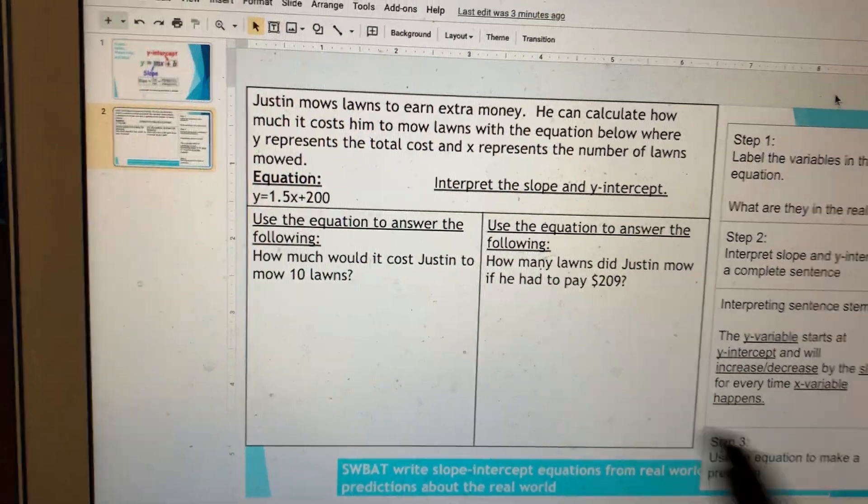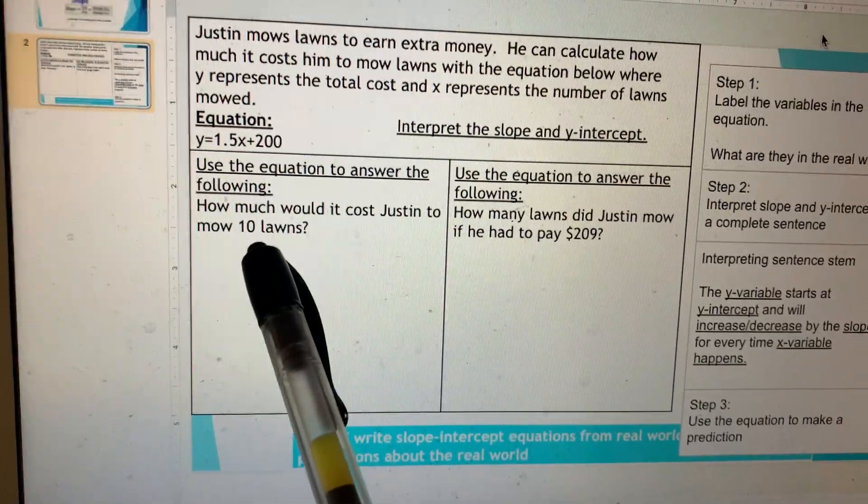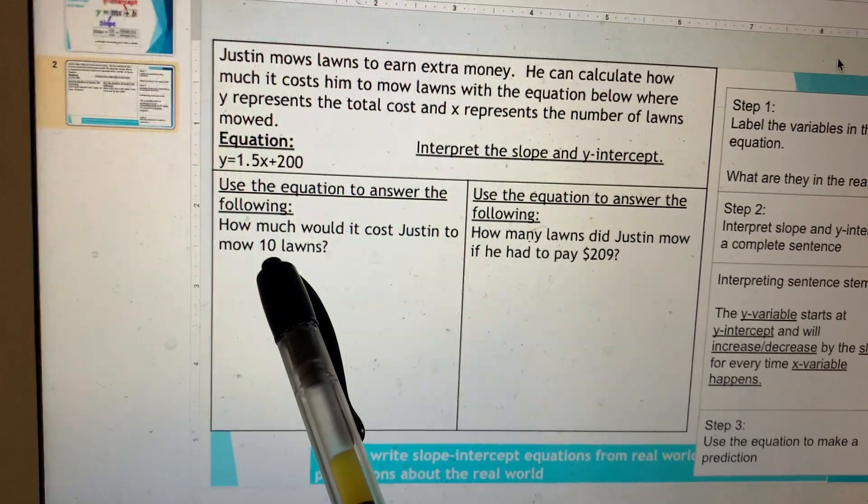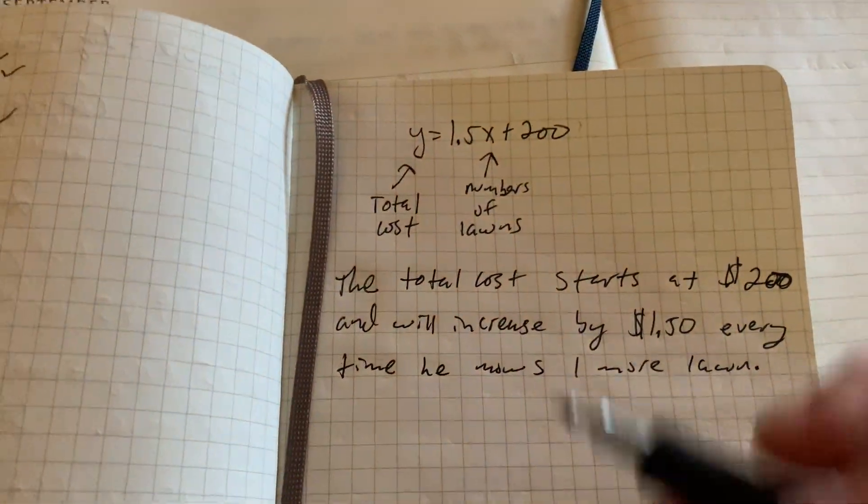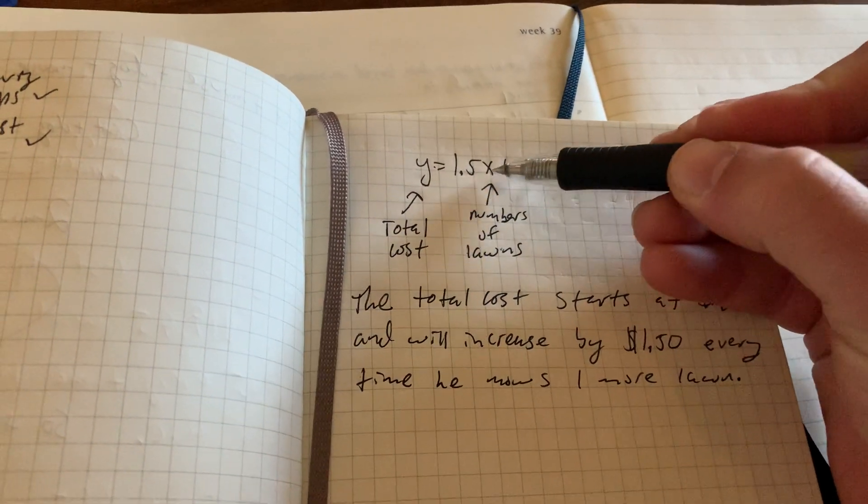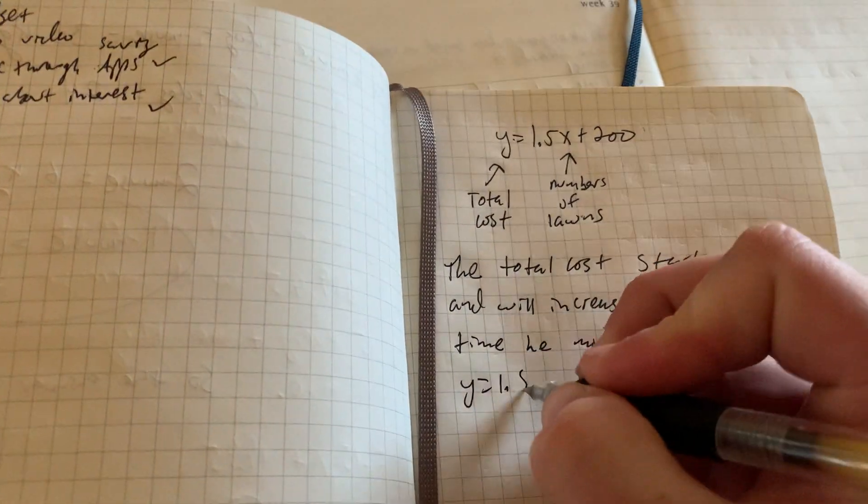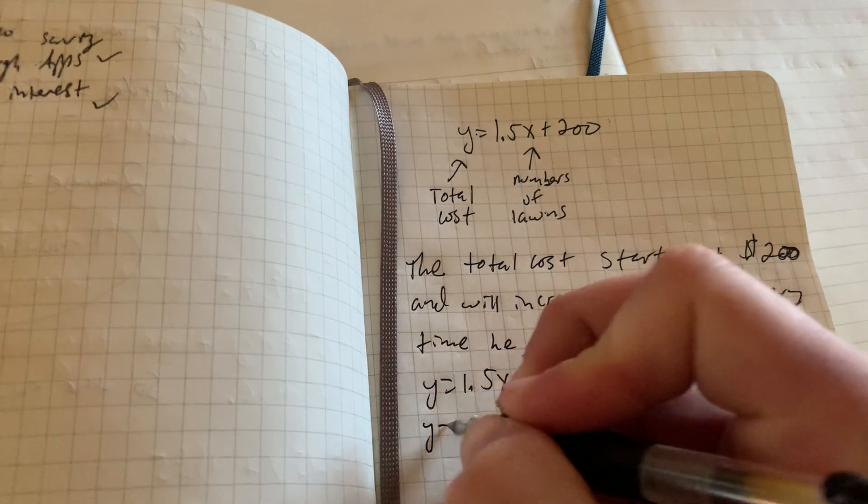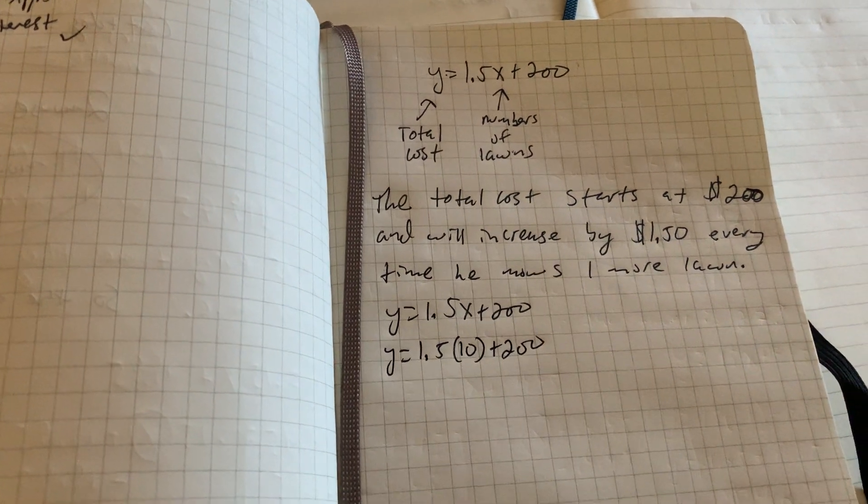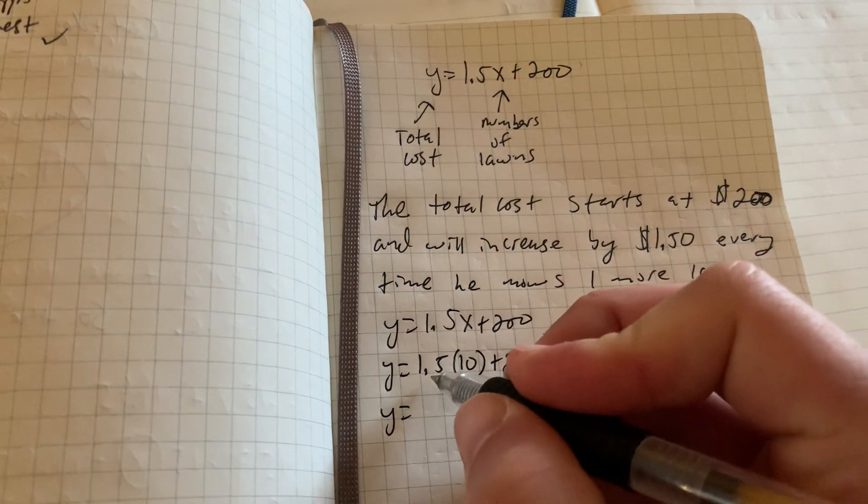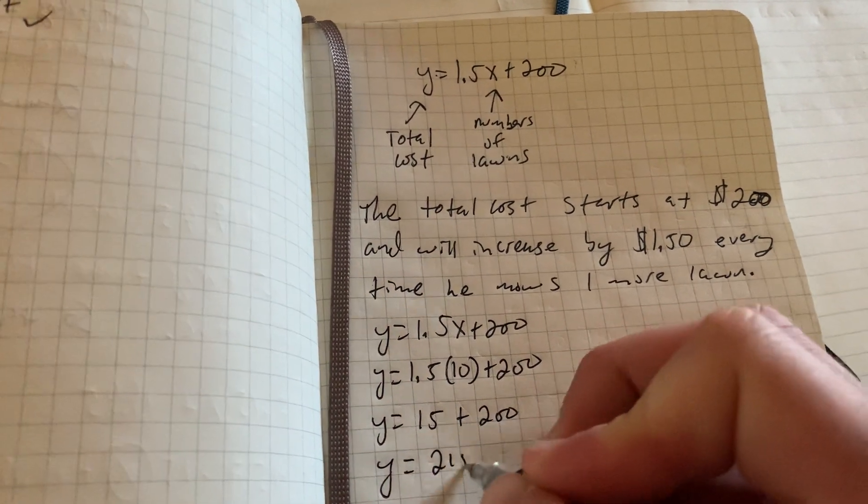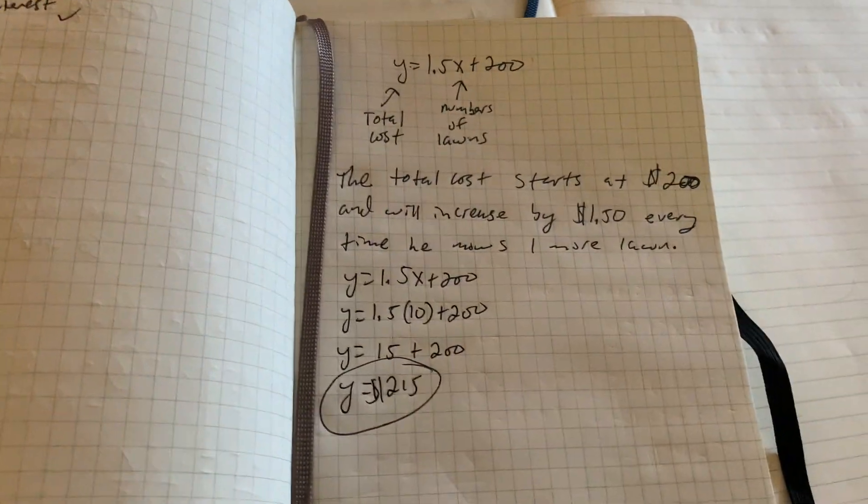Now let's do the prediction. How much would it cost to mow 10 lawns? We're going to take that number 10 and see which label it matches with, our Y or our X. 10 lawns is not a total cost. 10 lawns goes with the number of lawns, so it's going to go with our X variable. Down here, I'm going to take the equation the way it is, and then replace the X with that 10 in parentheses. Now we can continue looking at his costs. 1.5 times 10 is 15, plus 200. If he mowed 10 lawns, he would have spent $215.